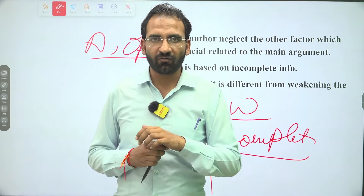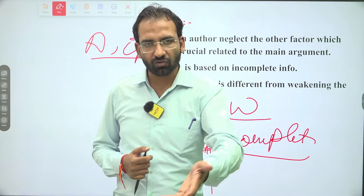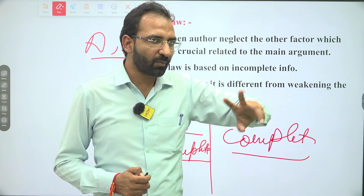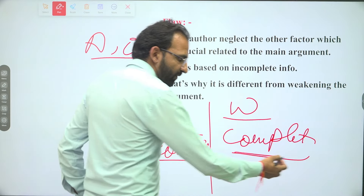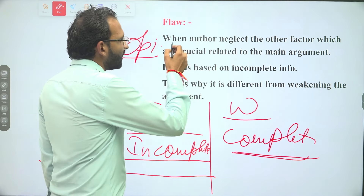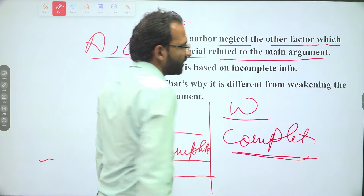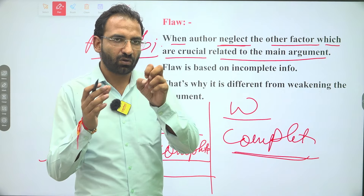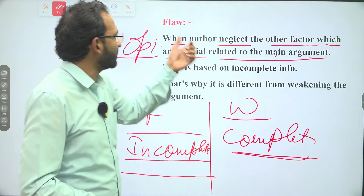So the information of the flaw is incomplete. When the author neglects other factors which are crucial and related to the main argument, the argument has a flaw. If there is a main argument and its reasoning ignores other related factors, then the argument has flow — that means flaw.